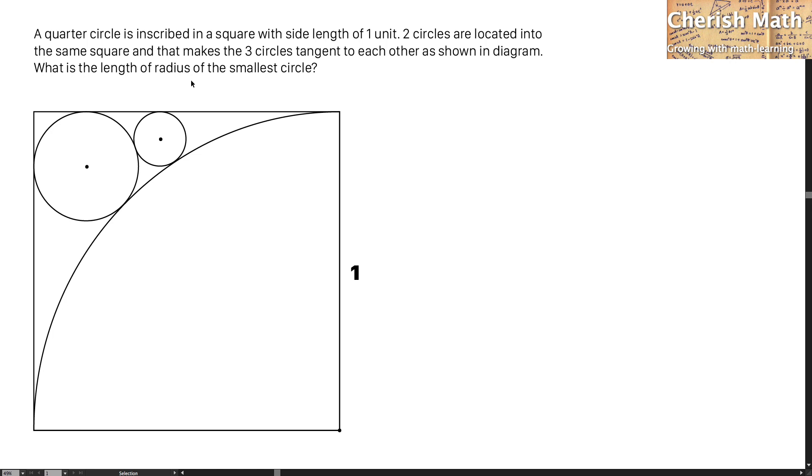What is the length of radius of the smallest circle? So, let's draw a red line connecting from the center of the quarter circle to the center of the larger circle. And I'm going to make a triangle and this is how it looks like.